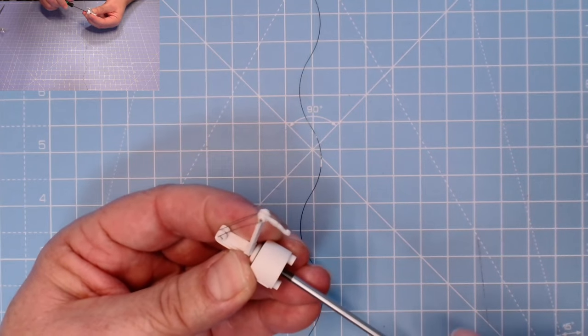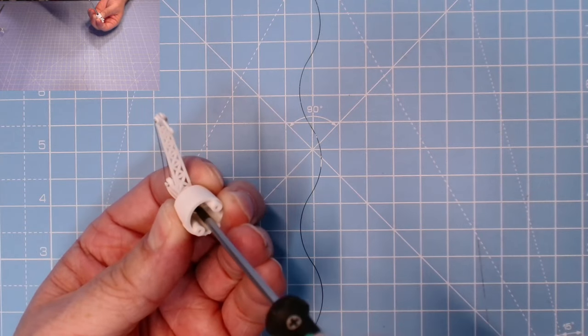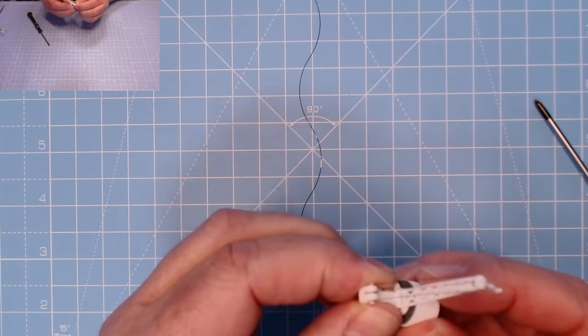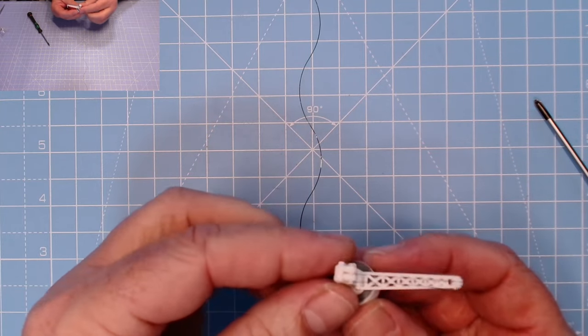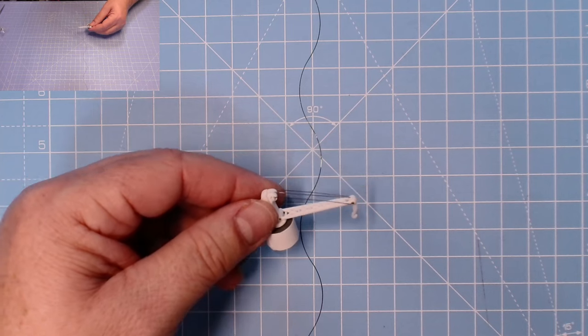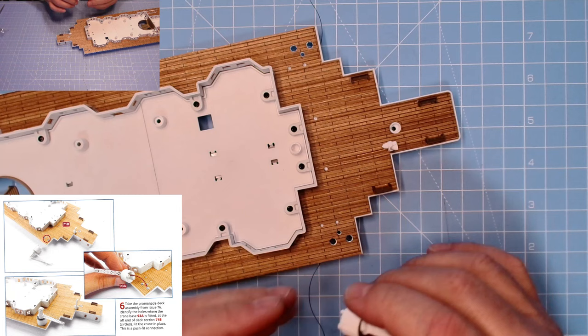Now you don't need to fully tighten this screw because you want this crane to be able to rotate. Just to keep it on top there. There we go. As long as that moves around, which it does, we're good, we're good to go. Finally, excellent. Let's get the promenade deck.